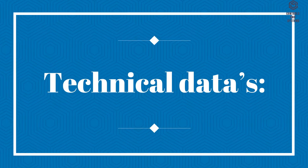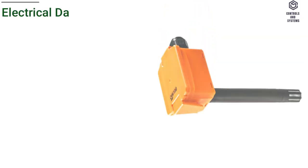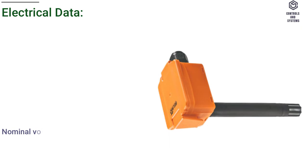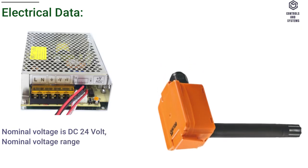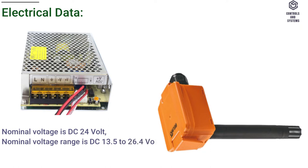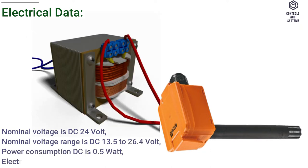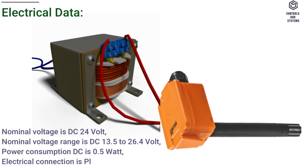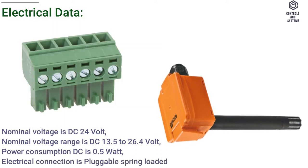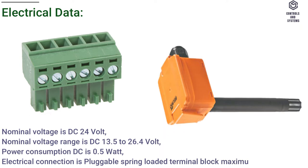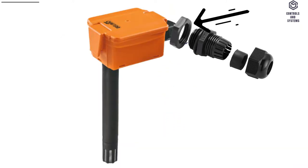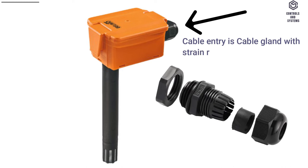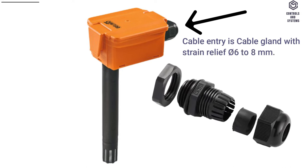Technical Data — Electrical Data: Nominal voltage is DC 24 volt. Nominal voltage range is DC 13.5 to 26.4 volt. Power consumption DC is 0.5 watt. Electrical connection is pluggable spring-loaded terminal block, maximum 2.5 mm². Cable entry is cable gland with strain relief, ∅6 to 8 millimeters.